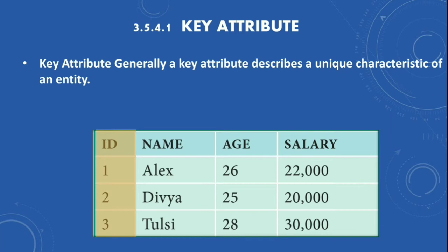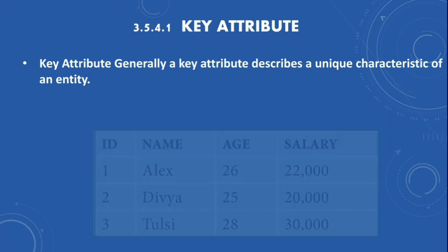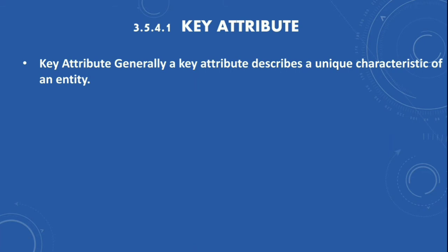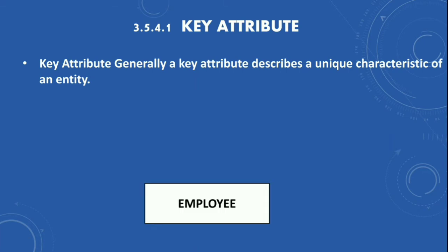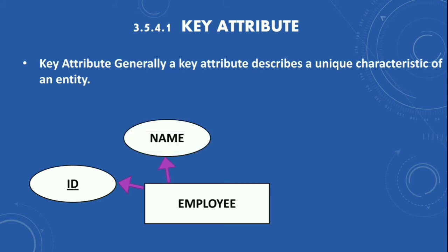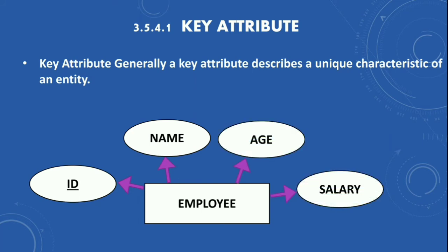To draw a key attribute in a diagram: represent the entire table as a rectangle box named 'Employee'. Represent each column as an oval shape with the column name inside. For the key attribute, underline the name inside the oval — for example, 'ID' is underlined. Other columns — Name, Age, and Salary — are shown in ovals without underlining.